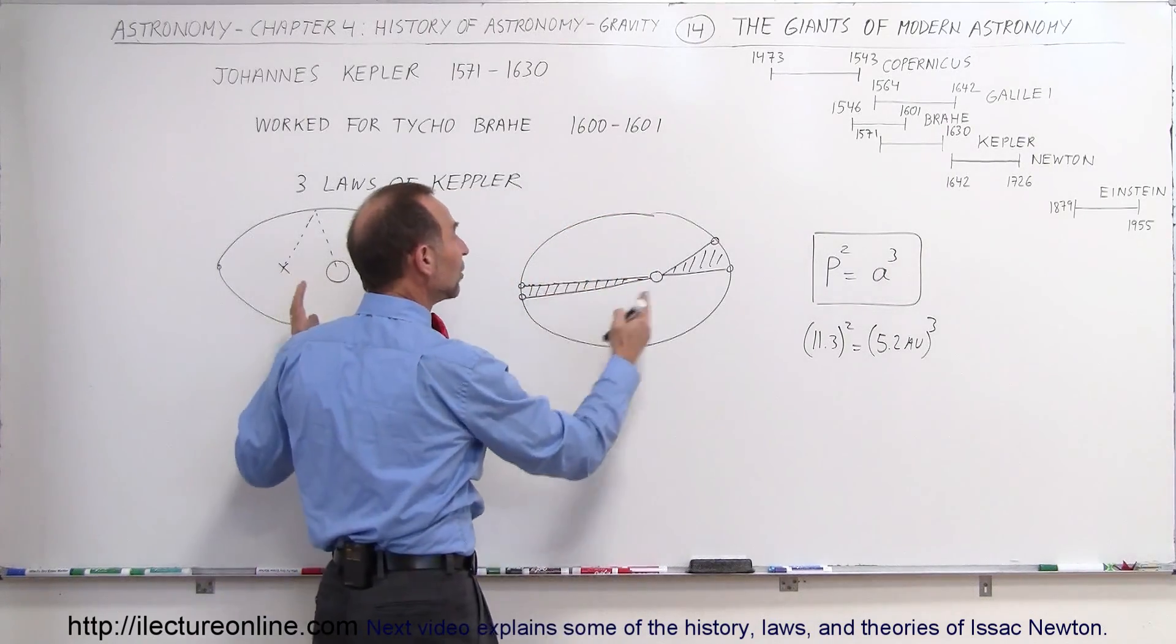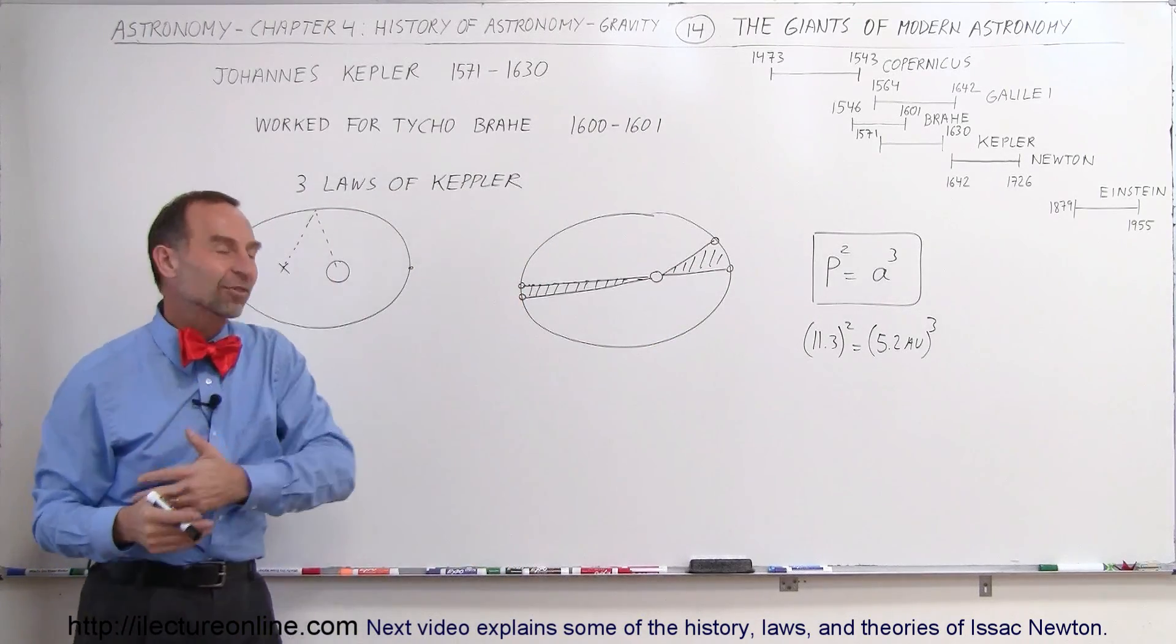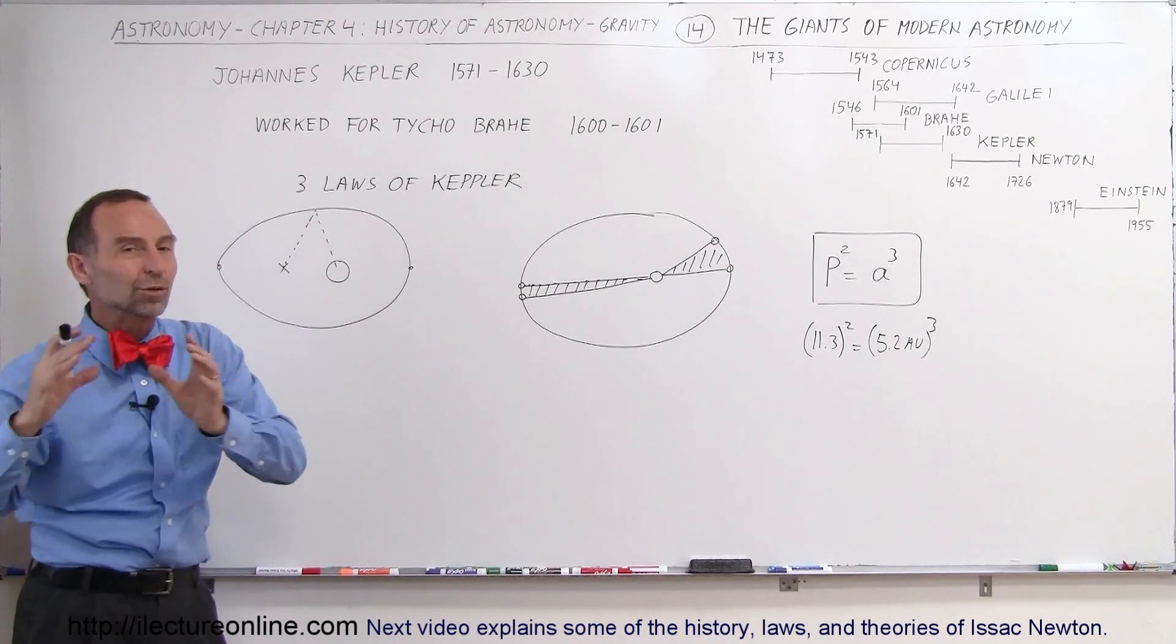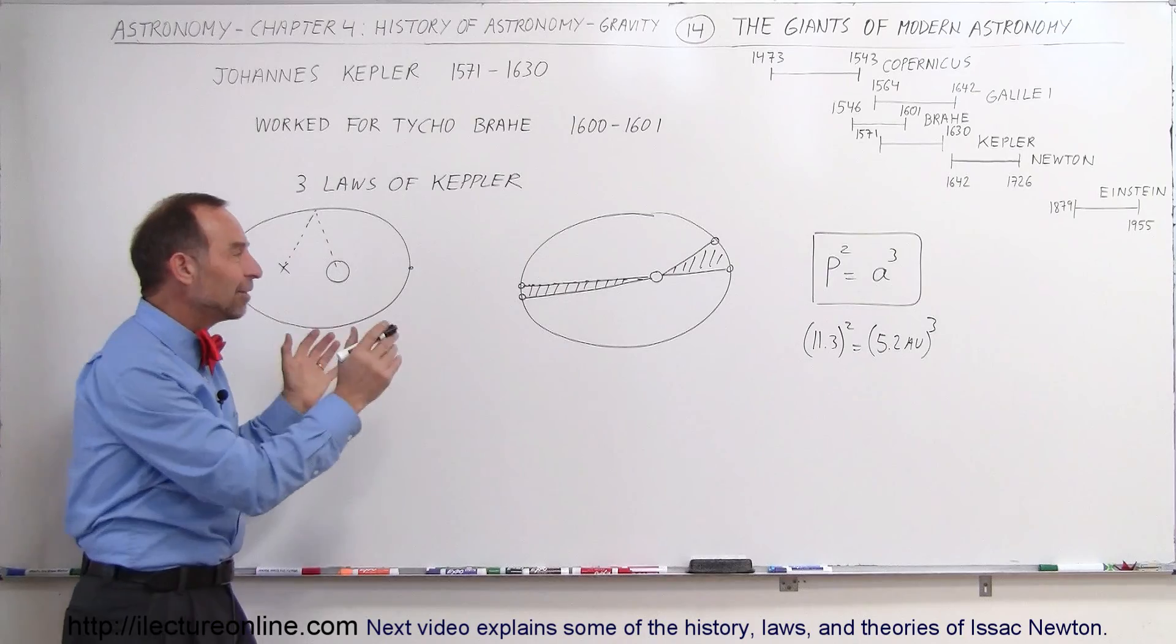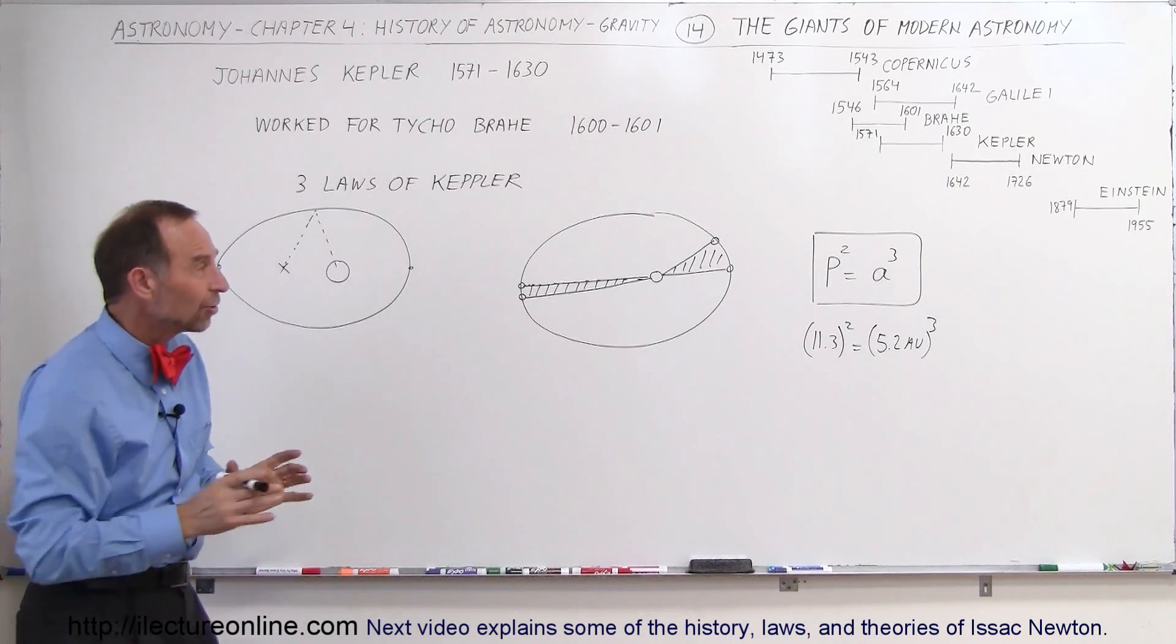This revolutionized their understanding of the solar system. Finally, we no longer needed the deferent and epicycles. We no longer needed the thing that planets moved in circles, we knew they moved in ellipses. And that everything we observed, and everything that Tycho had observed over those 20 years,